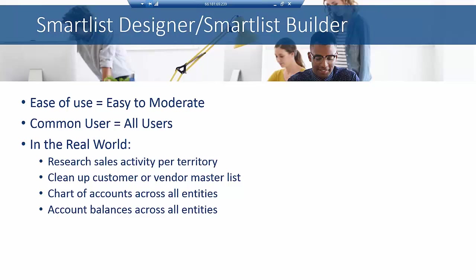In the real world, we see a lot of researching sales activity or cleaning up vendors or vendor master list information, because you can look at all that data in a spreadsheet — it's a lot easier to scroll through. You can pull in a chart of accounts across all entities or account balances across all entities. So there's significant ability, whether you use SmartList or SmartList Designer or SmartList Builder, to pull in good information and analyze it on the screen or in a spreadsheet.